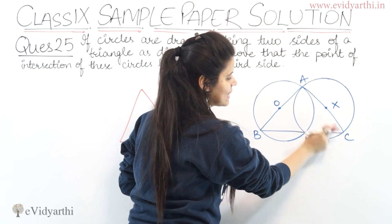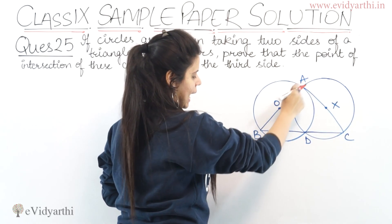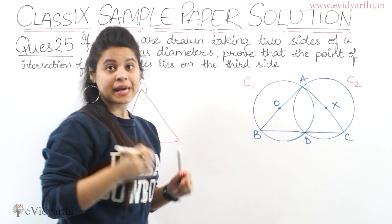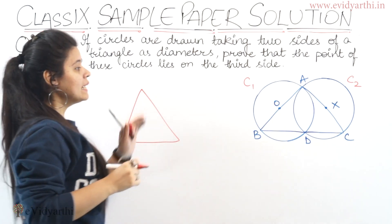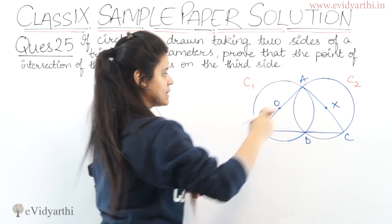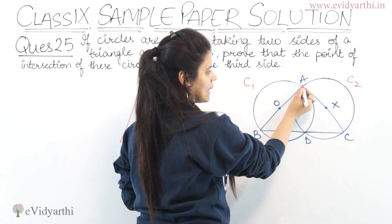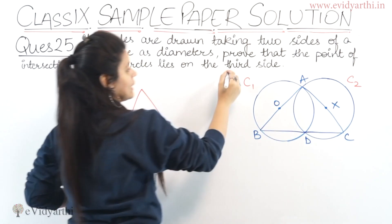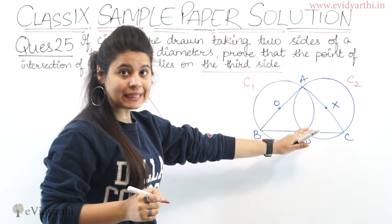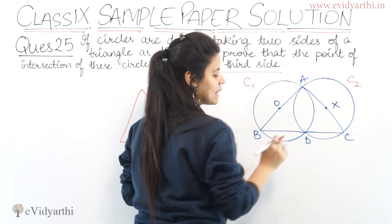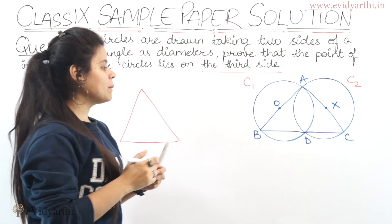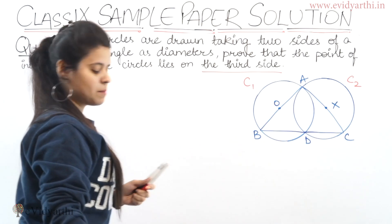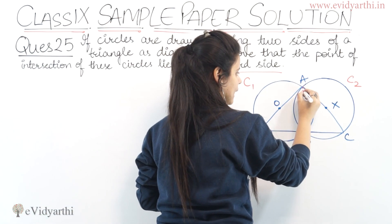Here we have made a circle with AC and AB as diameters. Let's call it Circle 1 and Circle 2. We have to prove that the intersection of these circles lies on the third side. We can clearly see that the intersection point of these two circles lies on the third side of the triangle.